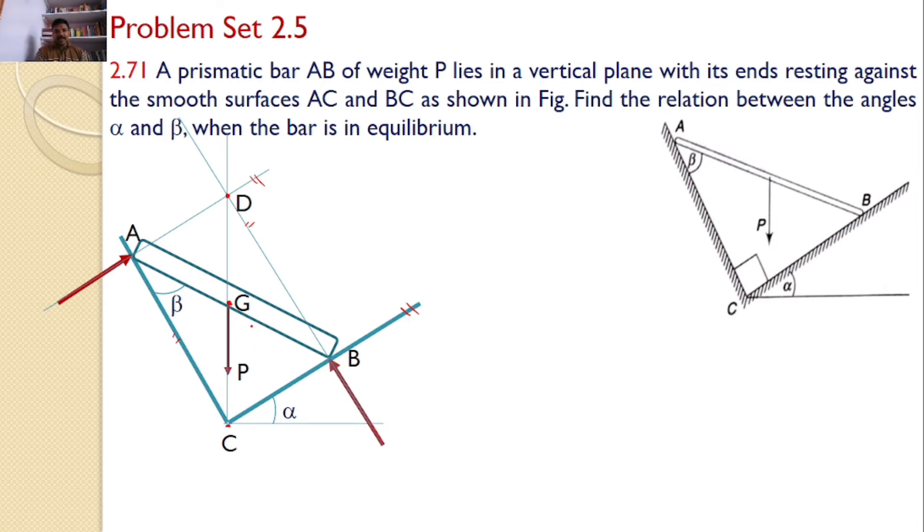Now let us see the angle. This surface makes an angle alpha with the horizontal. This perpendicular to this surface and perpendicular to the horizontal means vertical. So the angle between these two will also be equal to alpha.